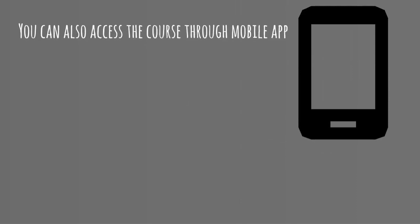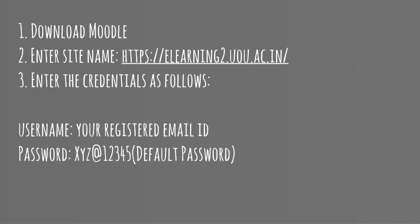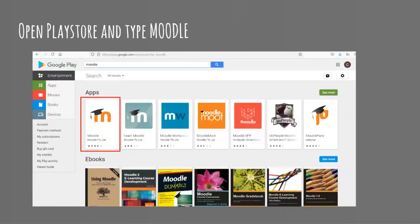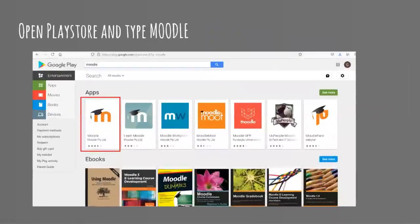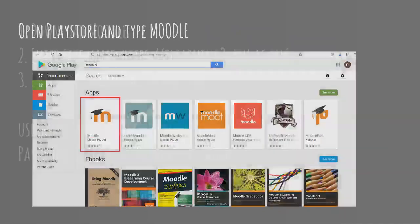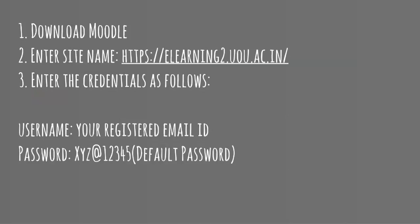You can also access this course through the mobile app. First, download Moodle by typing 'Moodle' on the Play Store. Once you download this app, it will ask for the site name, where you provide your registered email ID. The password is XYZ at the rate 12345. After this, you can access the course on your mobile phone.